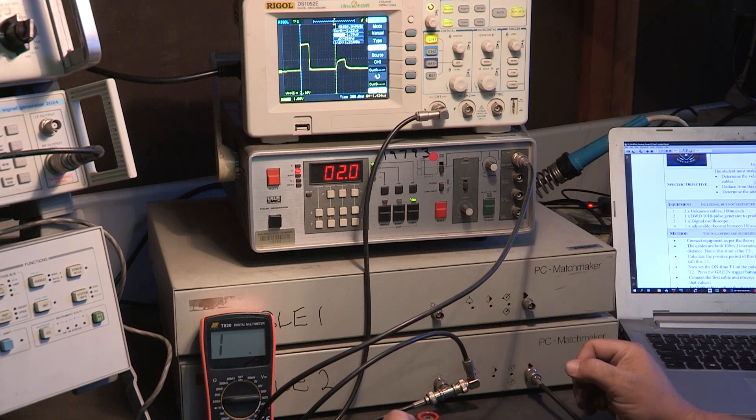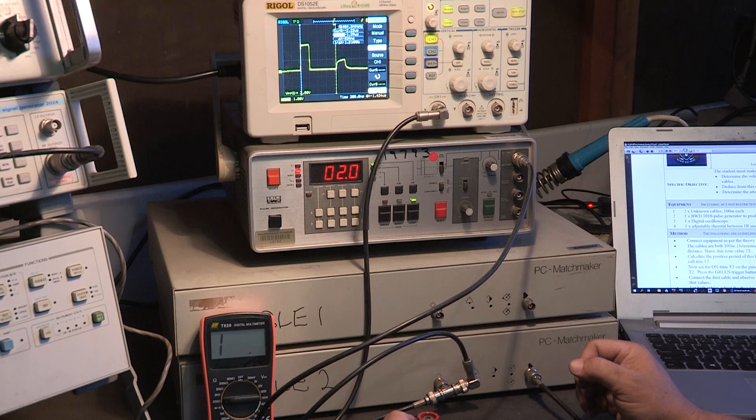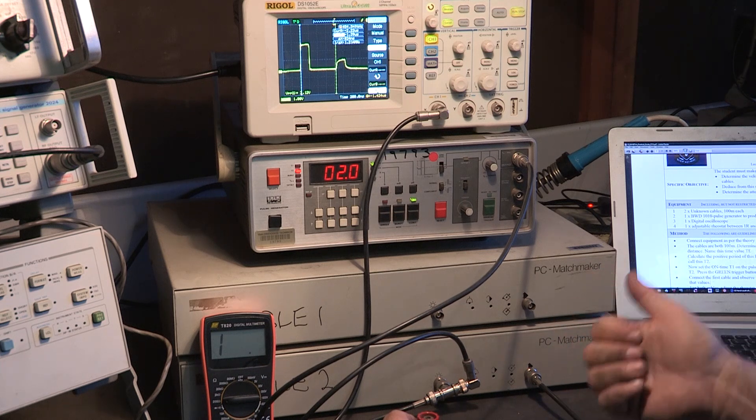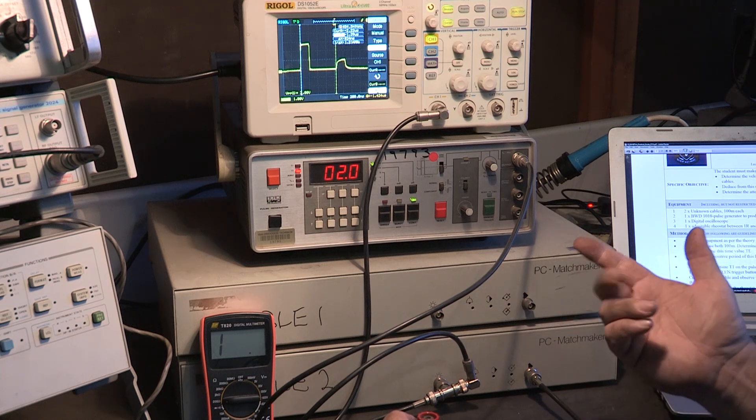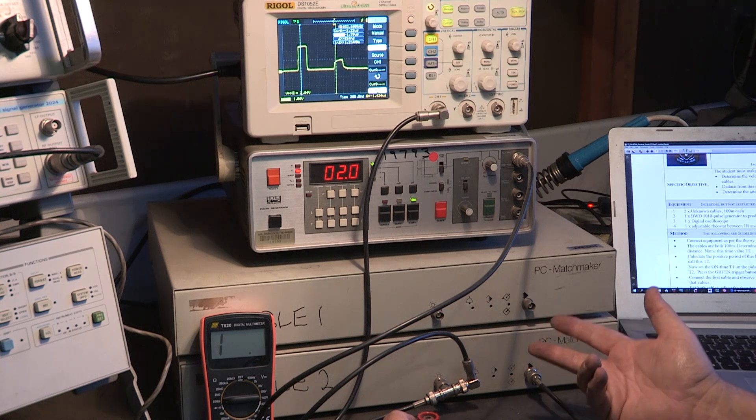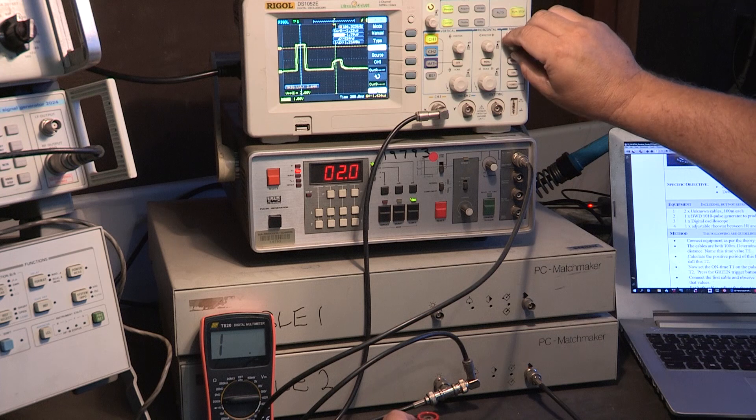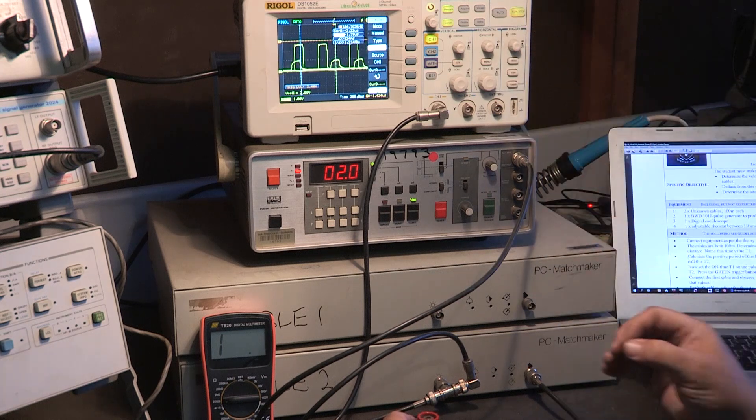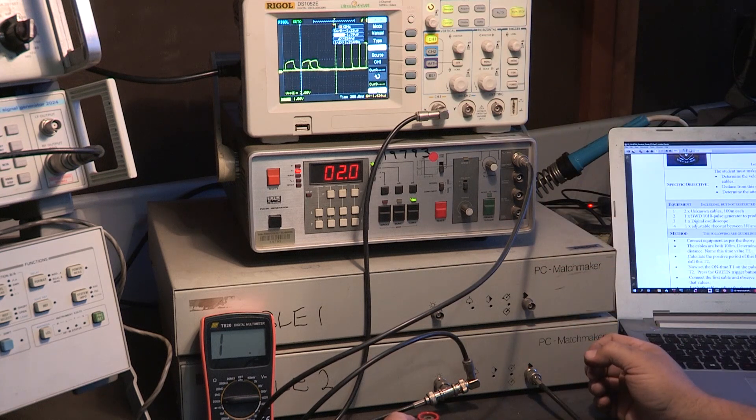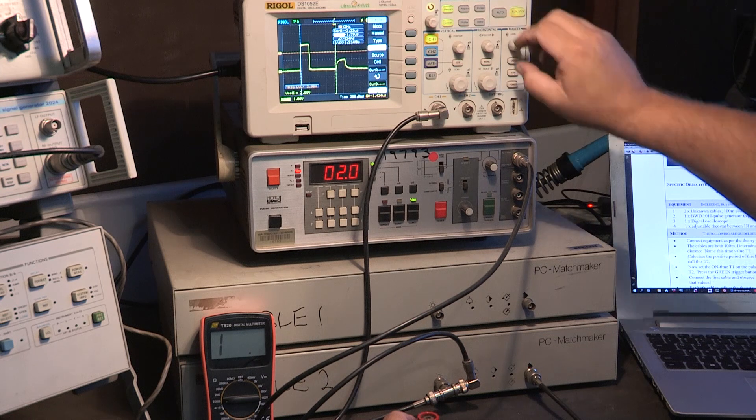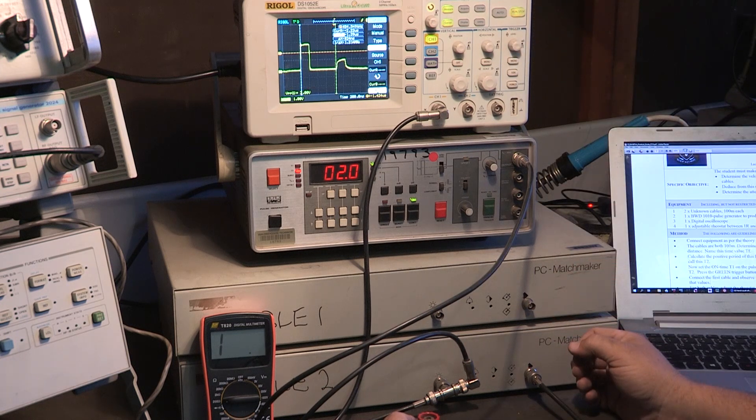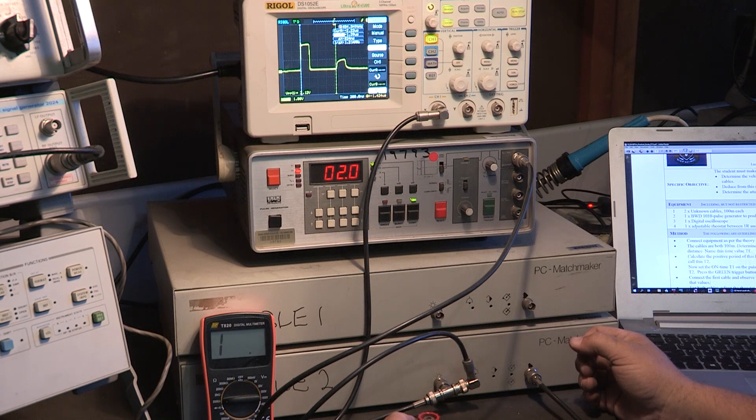Now in your task we ask you to simply work out what are the velocity factors and the impedance. Now you know that. And once you've sorted that out, we would like you to tell me what is the physical brand or making of this cable that is in each box. What type of RG cable did I put and hide away from you? Thank you very much.